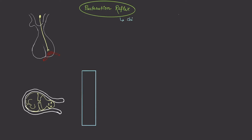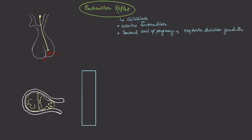Oxytocin is also important for the parturition reflex. Parturition is the process of giving birth, and during it there is continuous uterine contraction until the baby is delivered. Towards the end of pregnancy, oxytocin secretion gradually increases, reaching a peak at parturition. At that time, oxytocin receptor numbers also increase, so more oxytocin acts over a larger receptor population.